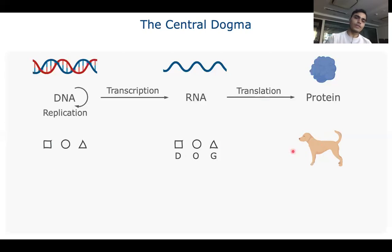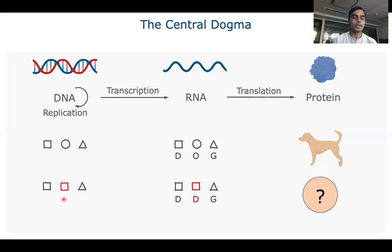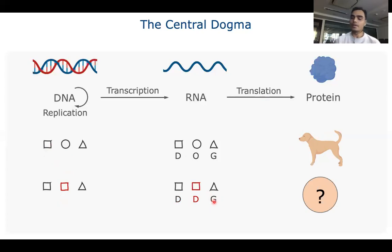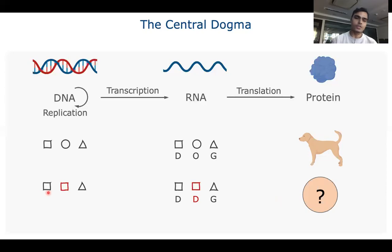Now we know this code is very important, and any change in this code may lead to a change in the message. This change will lead to a different outcome — the outcome can be positive, negative, or it may not change at all. This change in the DNA code is called a mutation.